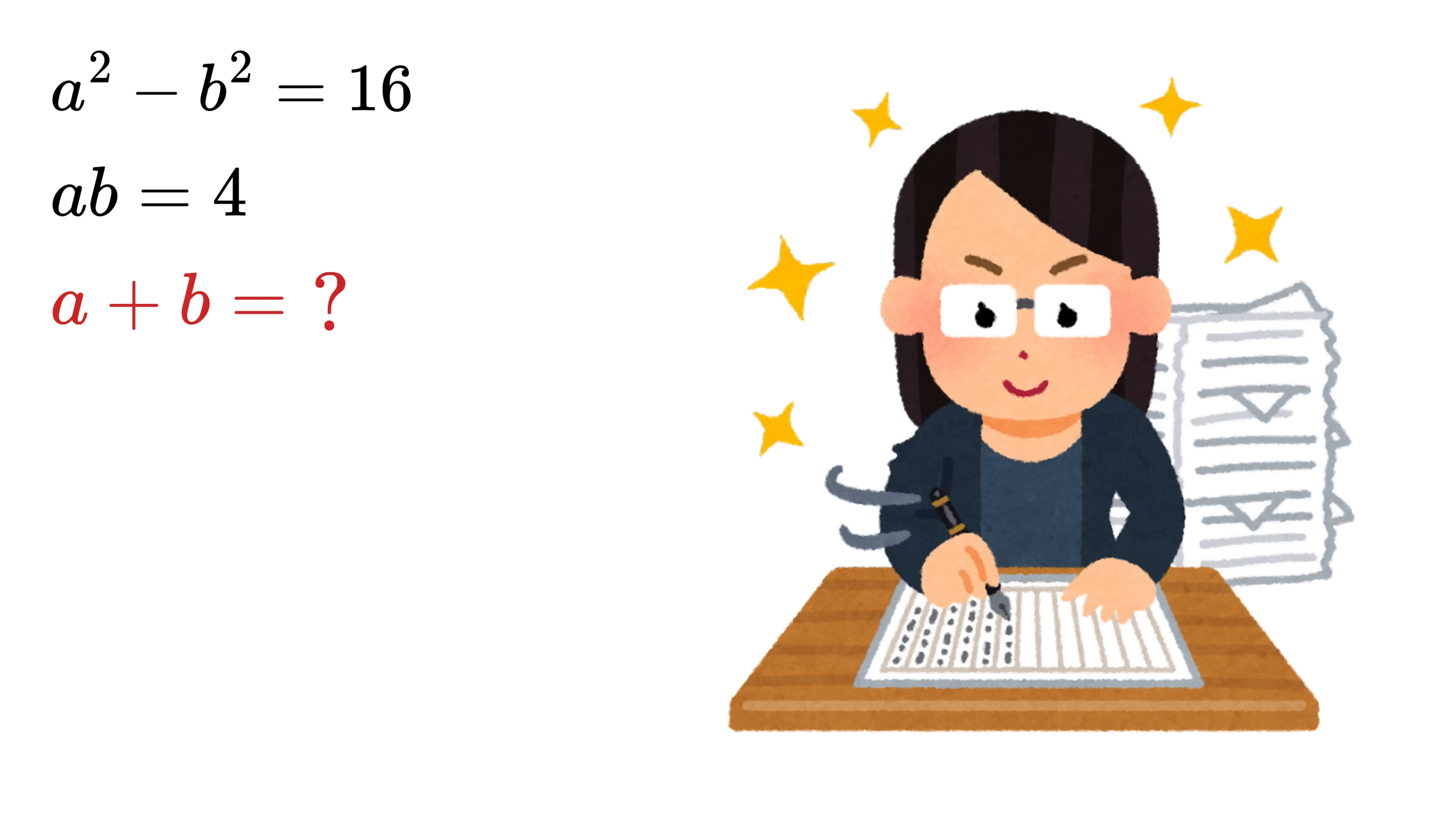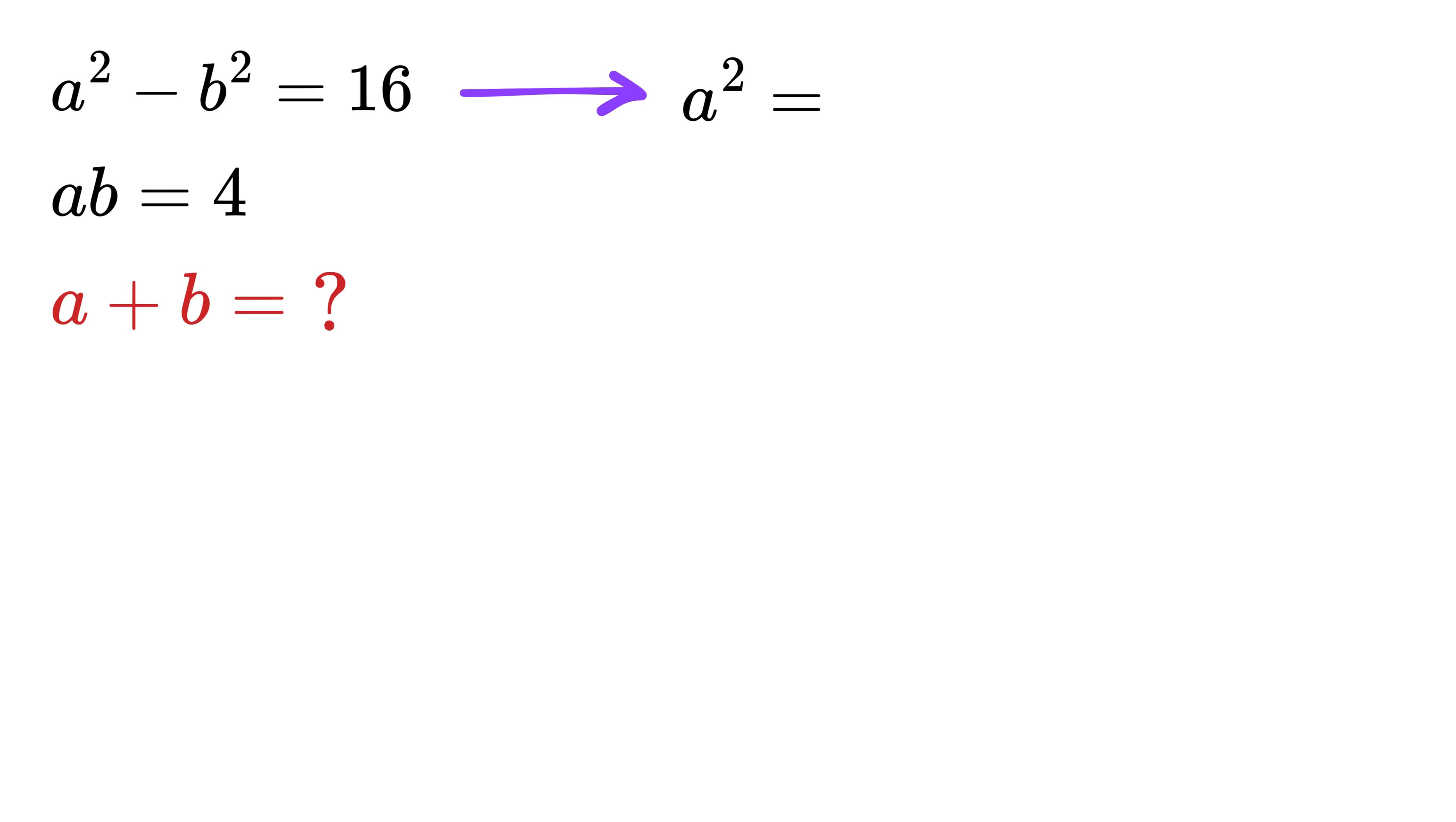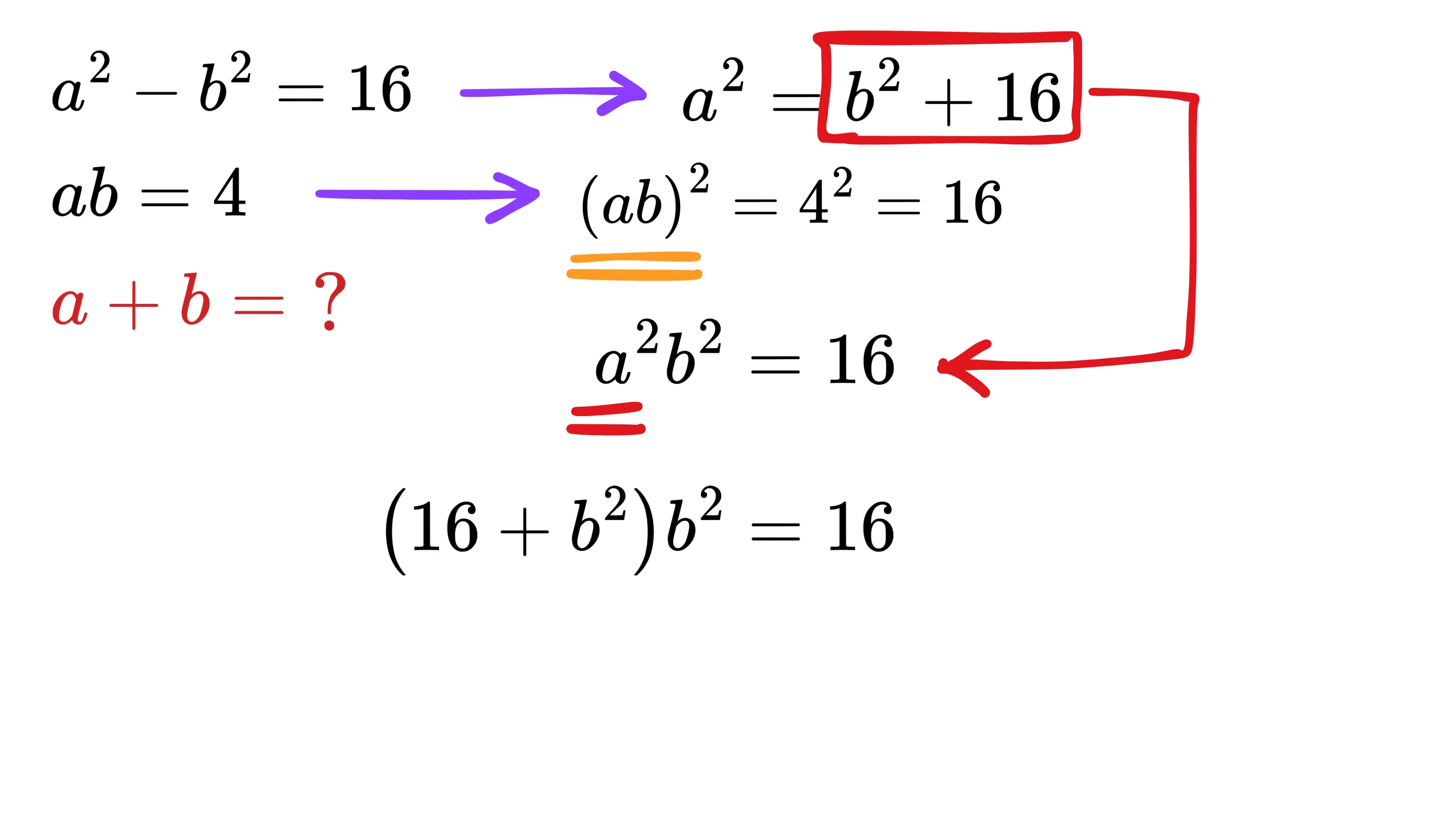So you might think that maybe from here I will take A squared as 16 plus B squared. Then I will square it to get AB whole square equals 4 squared or 16. AB whole square will be A squared times B squared. Then we might substitute A squared as 16 plus B squared here to get this.